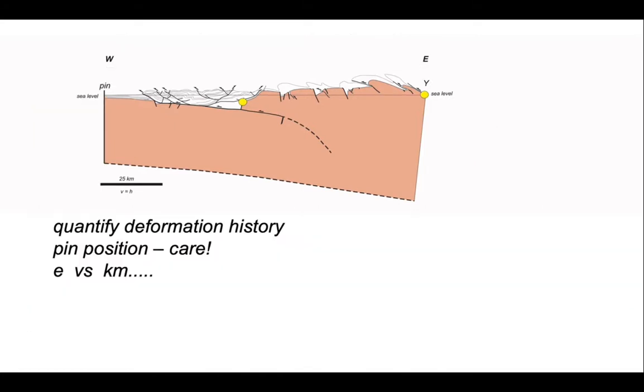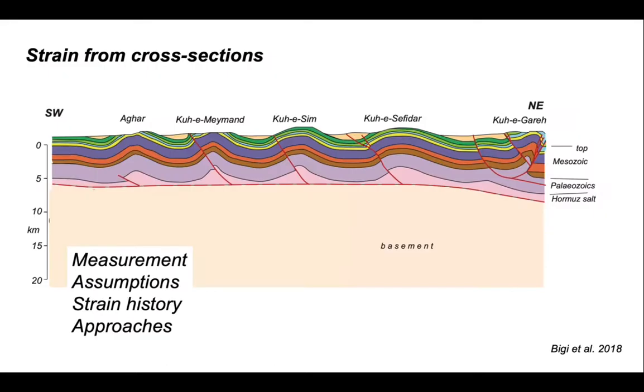So we can use cross-sections to quantify deformation history, but take care where you position your pins and loose lines. And especially, we need to think rather carefully about whether we use the dimensionless parameter E or kilometres. Nevertheless, cross-sections represent the best source of information on the amount of deformation on a large scale and therefore are essential for linking outcrop to tectonics.